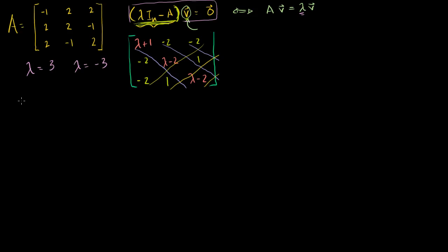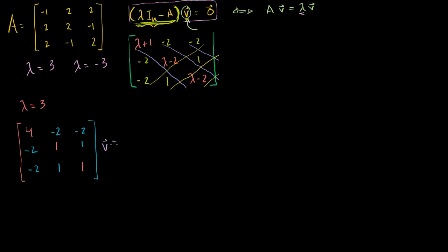Let's take the case of lambda is equal to 3 first. If lambda is equal to 3, this matrix becomes: lambda plus 1 is 4, lambda minus 2 is 1, lambda minus 2 is 1, and all other terms stay the same: minus 2, minus 2, minus 2, 1, minus 2, and 1. This matrix times eigenvector v equals 0. The eigenspace for eigenvalue 3 is the null space of this matrix — lambda times the identity minus A.